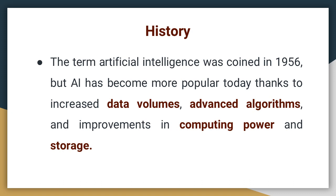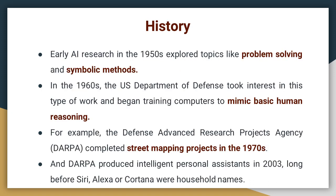The term artificial intelligence was introduced in 1956. However, the domain of artificial intelligence remained dormant for the next few decades. AI has become more popular today thanks to increased data volumes — also called big data — advanced algorithms, and improvements in computing power and storage. The additional computing power required for AI processing comes through cloud computing. Early AI research in the 1950s explored topics like problem solving and symbolic methods. In the 1960s, the US Department of Defense began training computers to mimic basic human reasoning. DARPA completed street mapping projects in the 1970s and produced an intelligent personal assistant as early as 2003, long before well-known applications such as Siri, Alexa or Cortana became household names.